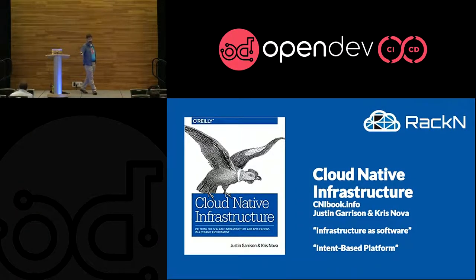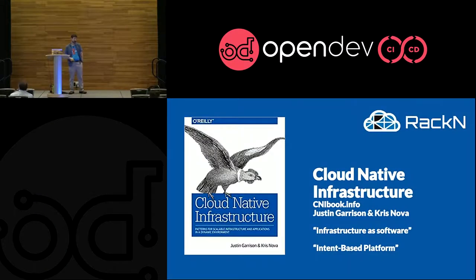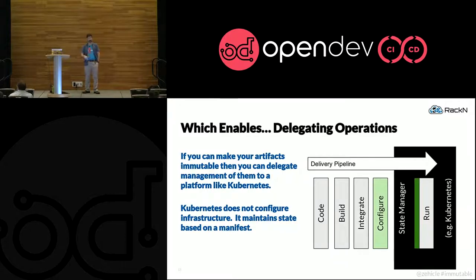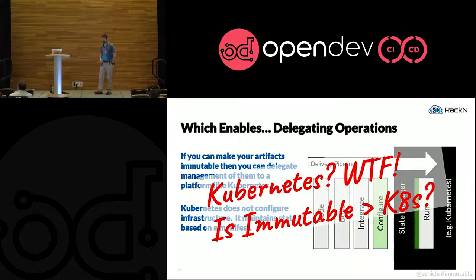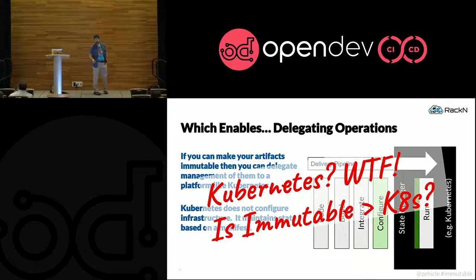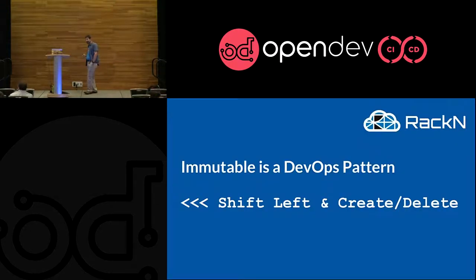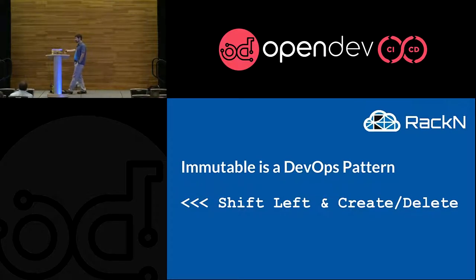If you want to take this a step further, there's a really good book by Justin Garrison and Chris Nova called Cloud Native Infrastructure. They go not to infrastructure as code, but infrastructure as software. It starts talking about intent-based computing where you can assert a target state. In that case, you have a state manager that takes these immutable artifacts and does all this work for you — and that's Kubernetes. Immutable is a much broader pattern: it applies to containerized infrastructure, VM infrastructure, and we're also bringing it into physical infrastructure.